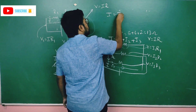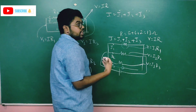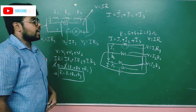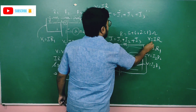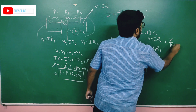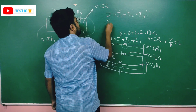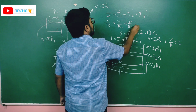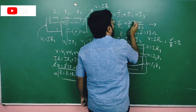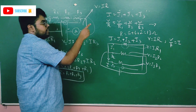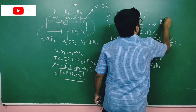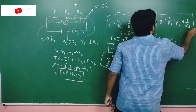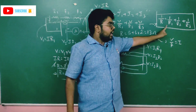So i equals i1 plus i2 plus i3. Since i equals V over R, it becomes V over R equals V over R1 plus V over R2 plus V over R3. V is common and cancels, so we remain with 1 over R equals 1 over R1 plus 1 over R2 plus 1 over R3. This is the formula of parallel connection — it is a reciprocal formula.